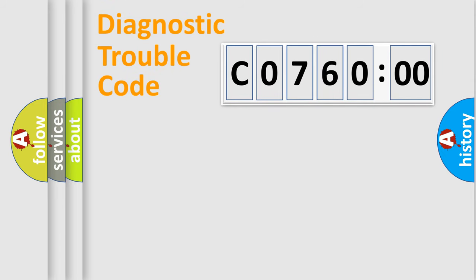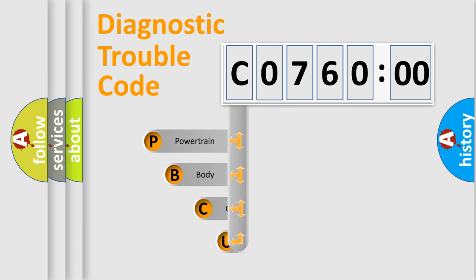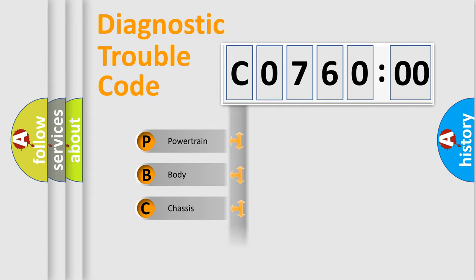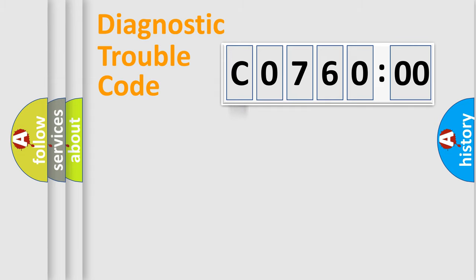Let's do this. First, let's look at the history of diagnostic fault code composition according to the OBD2 protocol, which is unified for all automakers since 2000. We divide the electric system of an automobile into four basic units: Powertrain, Body, Chassis, and Network.